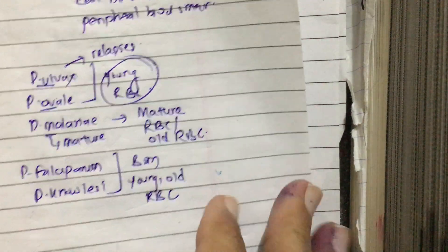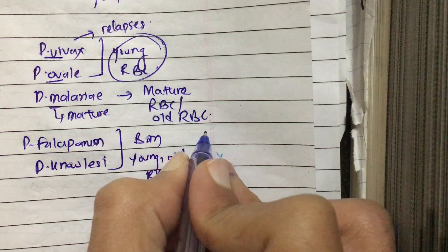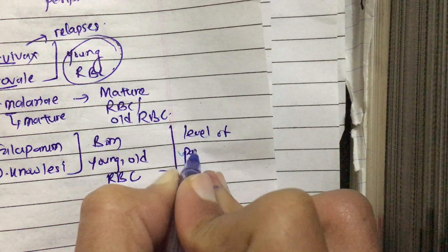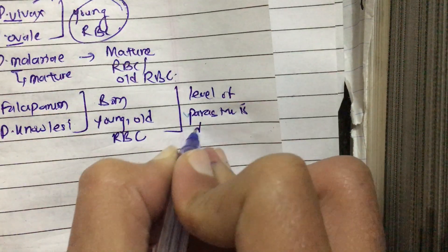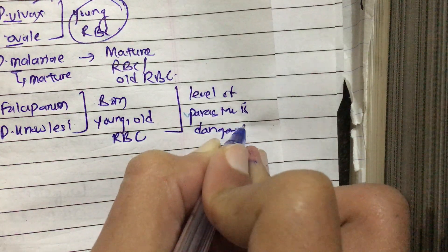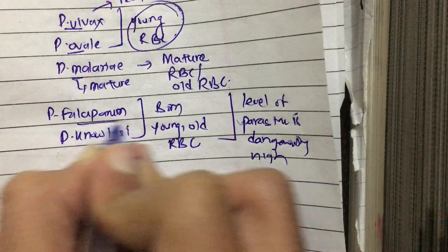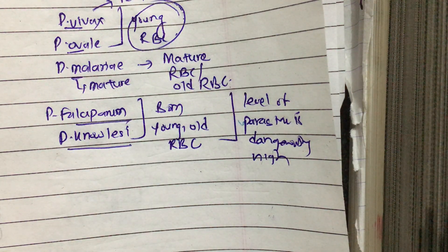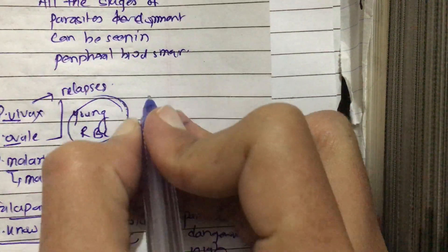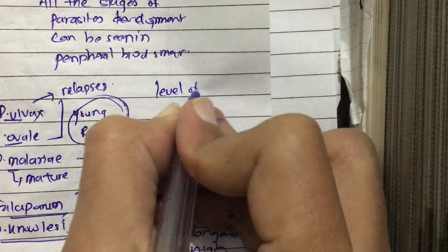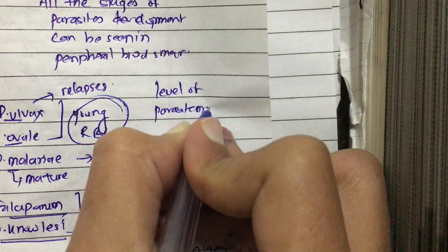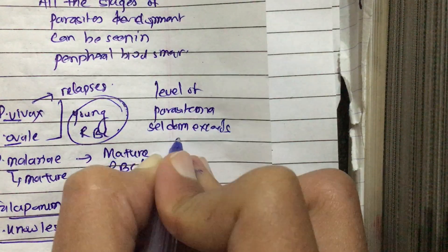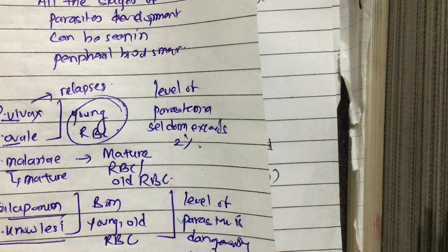The level of parasitemia is dangerously high in Plasmodium falciparum and Plasmodium knowlesi. In contrast, for Plasmodium vivax, Plasmodium ovale, and Plasmodium malariae, the level of parasitemia is low and seldom exceeds 2%.